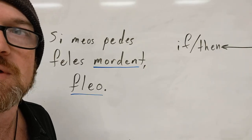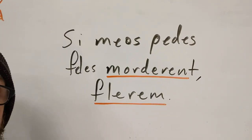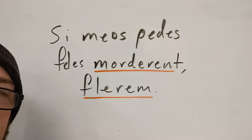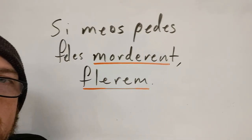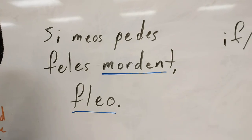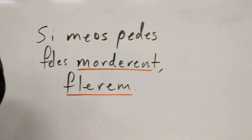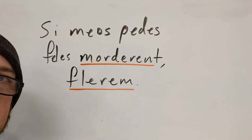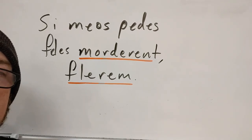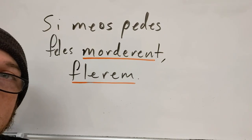It is possible to word a condition such that it is not true or not factual. Check this one out: if the cats were biting my feet, then I would be weeping. I've used all the exact same vocab words, but I have changed my verbs. Up here they are present tense, active indicative. But down here I've made them subjunctive, and that's the difference between a real versus an unreal condition — something that moves into the purely hypothetical.